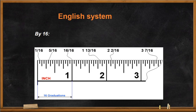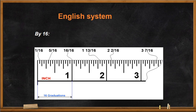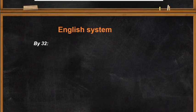By 16 means the inch is divided into 16 graduations. From zero to one, and from one to two, there are 16 lines each. Each is read as 1/16, 2/16, 3/16, 4/16, 5/16, 6/16, 7/16, 8/16 — which reduces to one-half — then 9/16, 10/16, 11/16, 12/16 — which is three-fourths — then 13/16, 14/16, 15/16, and 16/16. So by 16 means the graduations between zero and one inch are divided into 16 lines.